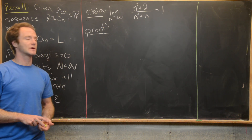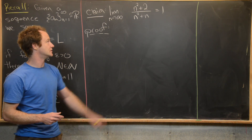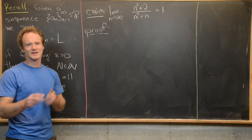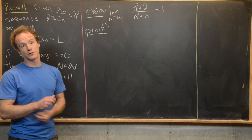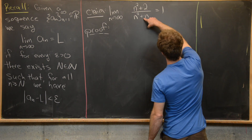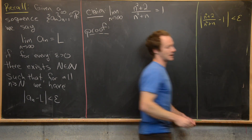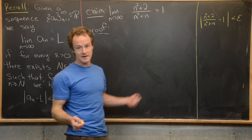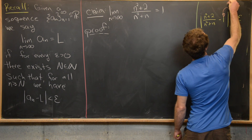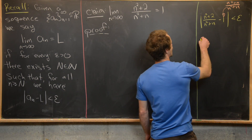For our last example, we show that the limit as n goes to infinity of (n²+2) over (n²+n) equals 1. We should know this from calculus: quadratics in numerator and denominator with the same leading coefficient give a limit of 1. We'll prove it carefully using the definition. The scratch work starts with the absolute value of (n²+2)/(n²+n) minus 1 being less than epsilon.